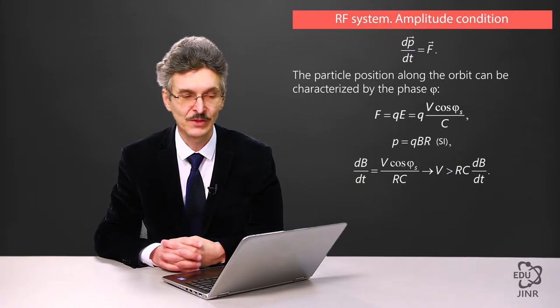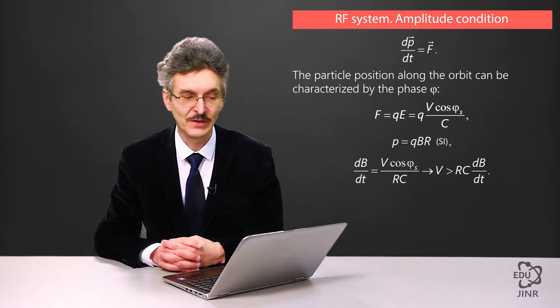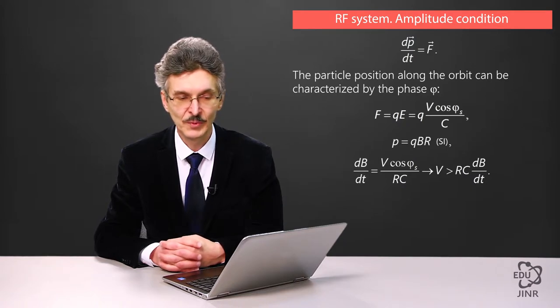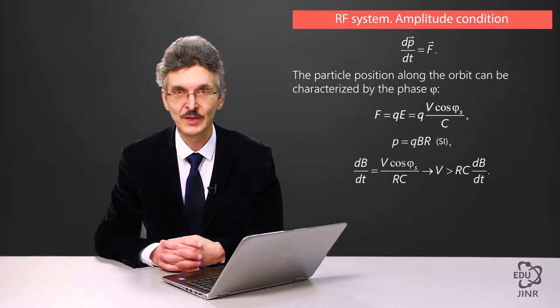After equating the derivative of the momentum to the acting force, we get the voltage condition. The amplitude voltage should be greater than the radius of the synchrotron, multiplied by its perimeter and the derivative of the magnetic field, divided by the derivative of time.